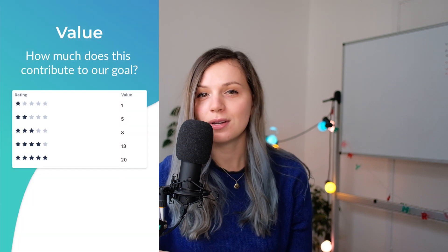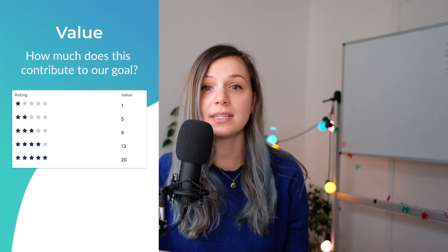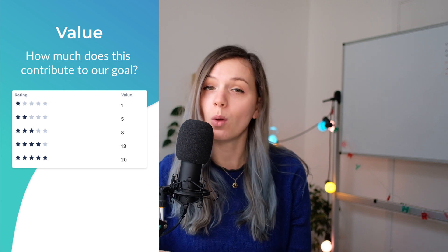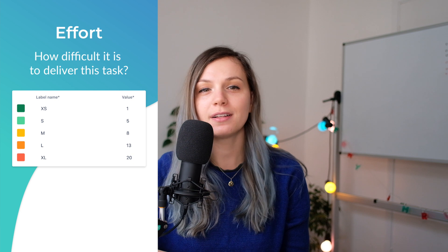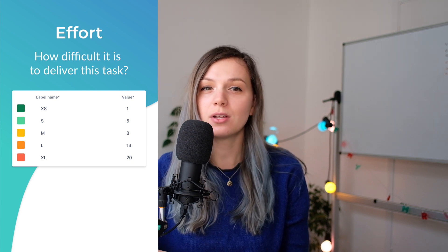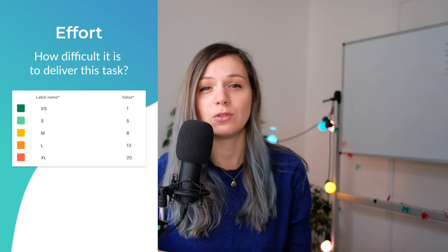To assign the value metric, ask yourself: how does this contribute to our goal? Assign values from low to high. To fill the effort metric, ask how difficult it is to deliver the task. You can use t-shirt sizes for estimation — teams are usually much more comfortable with them because they don't need to commit to any specific time frame.